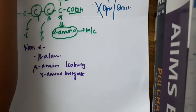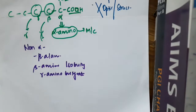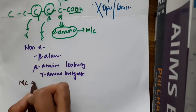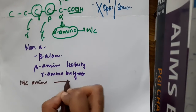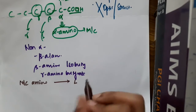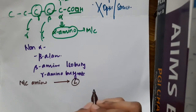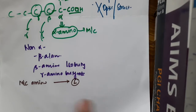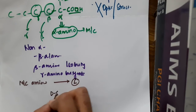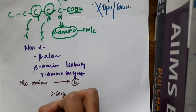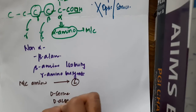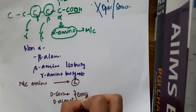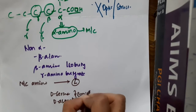Most commonly, amino acids are present in the L form of isomerism, except for two D forms: D-serine and D-aspartate. These D-serine and D-aspartate amino acids are present in the brain.